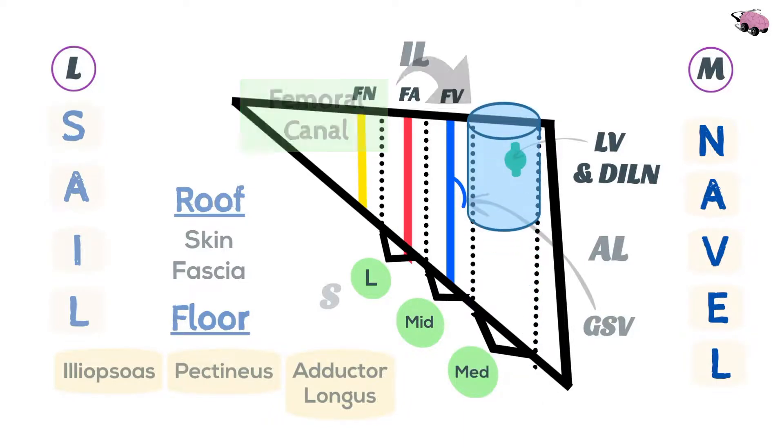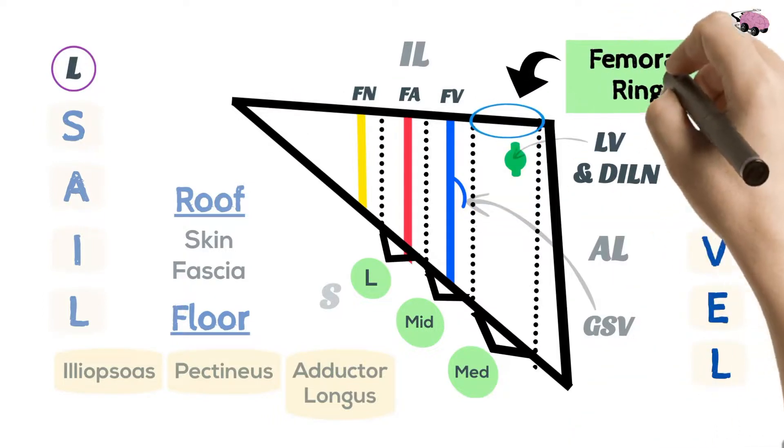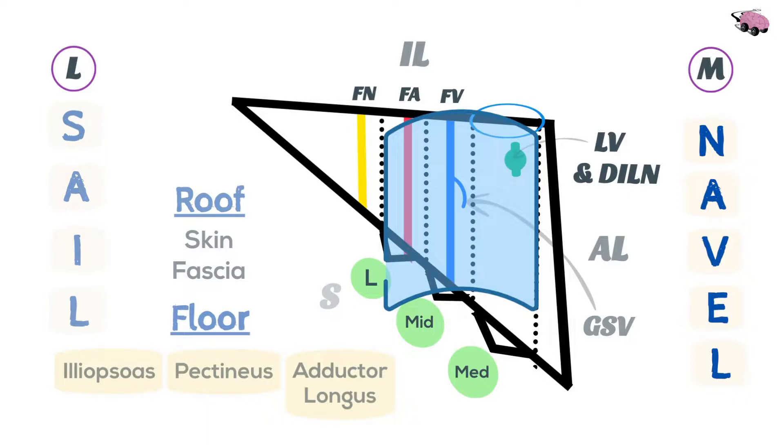The canal forms an opening ring which we'll draw here and label it the femoral ring. Just remember, the femoral sheath covers contents A to L, and the nerve is not included in the femoral sheath.